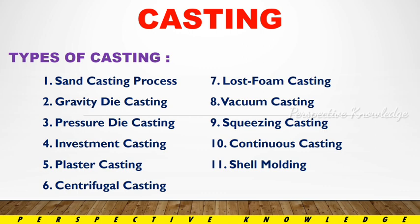For casting, there are basically 11 types: sand casting, gravity die casting, pressure die casting, investment casting, plaster casting, centrifugal casting, lost foam casting, vacuum casting, squeeze casting, continuous casting, and shell molding. As said, there are 11 types of casting.